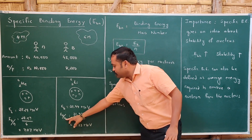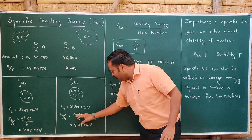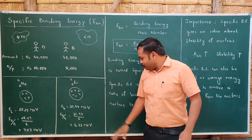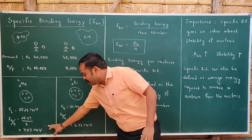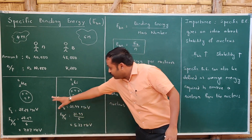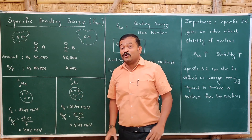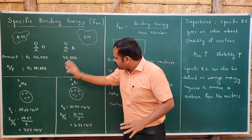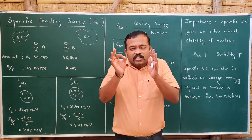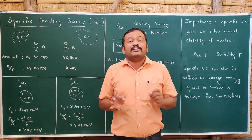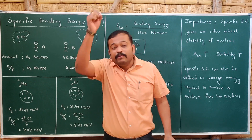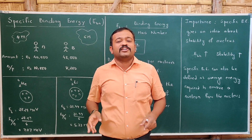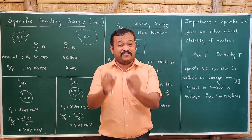For Lithium, the binding energy is 31.99 MeV, and with 6 members in its family — mass number 6 — so 31.99 divided by 6 gives 5.33 MeV. By this, we can say that specific binding energy is more in Helium than in Lithium, so Helium nucleus is more stable than Lithium nucleus. The stability of a nucleus does not depend on the binding energy; it depends upon the specific binding energy — just as the stability of a person depends upon salary per person, that is specific salary.